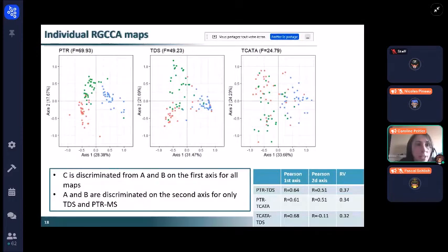Here are the individual RGCCA maps that can be read exactly as a PCA. Here you have the individuals - we have in green the product A, in red the product B, and in blue the product C. We can find that C was discriminated from A and B on the first axis for all blocks, both sensory and chemical. A and B are discriminated on the second axis here in PTR, in here in TDS, but it's not so clear in TCATA. So in fact here we find back what we have previously seen on the discrimination of A and B on the second axis.